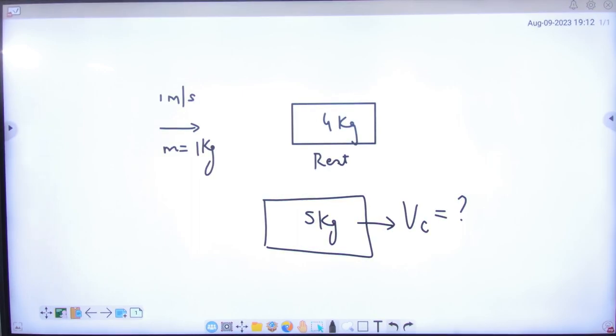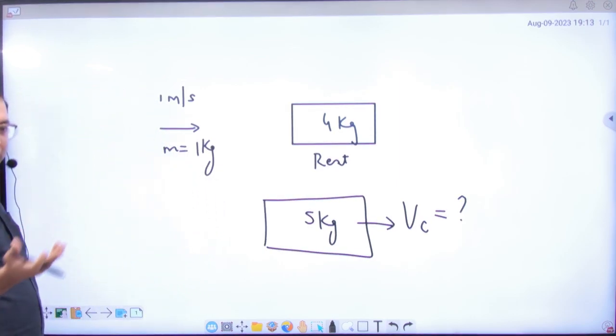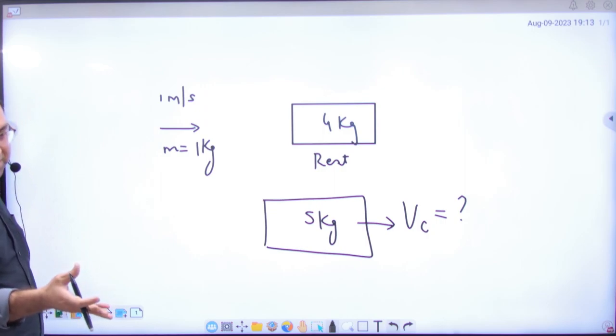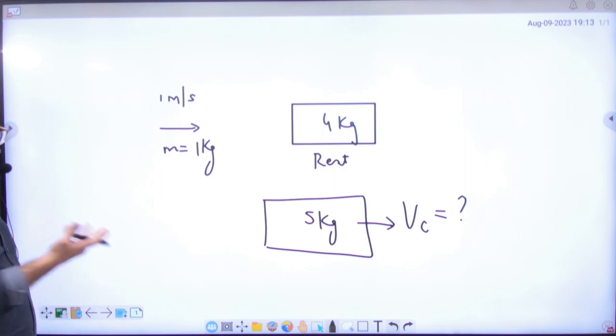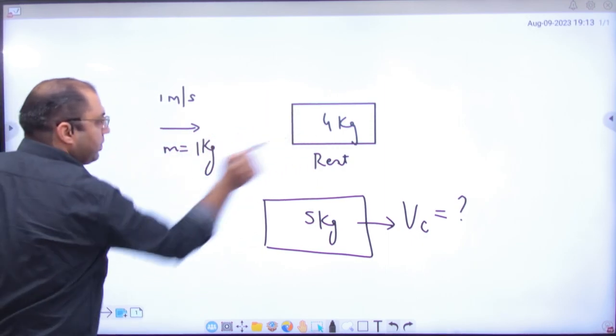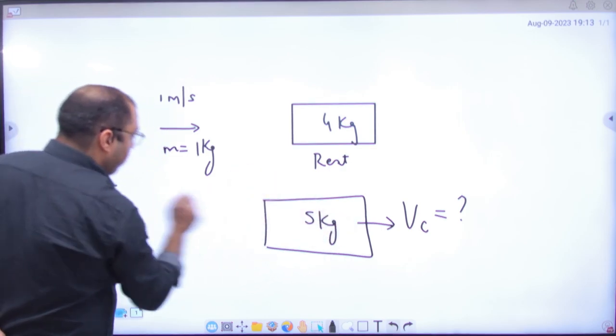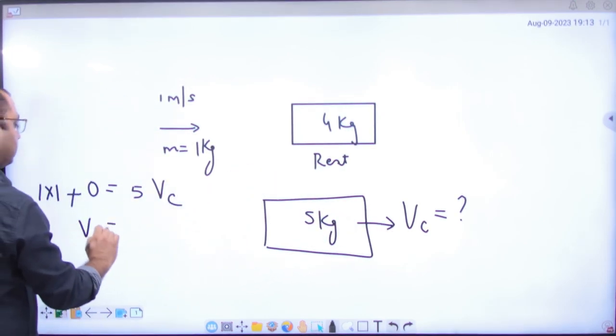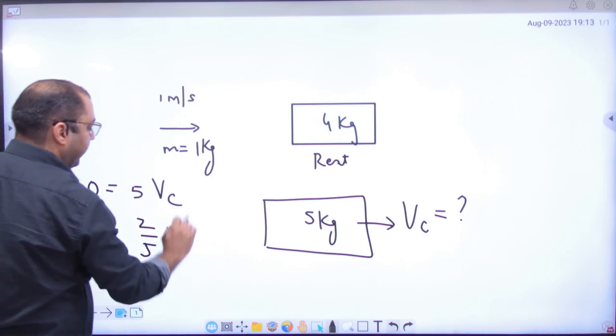Did we have such a question before? In which chapter? Conservation of momentum. If there are collisions, bombs explode, it is an isolated system. Conservation of momentum. So what will we do? Initial momentum is 1 into 1. Block momentum is 0. Final momentum is 5 into VC. So VC is 1 by 5. Do you understand the point?